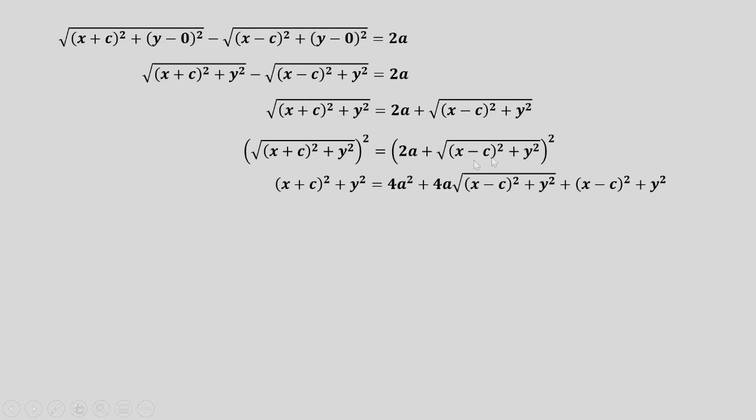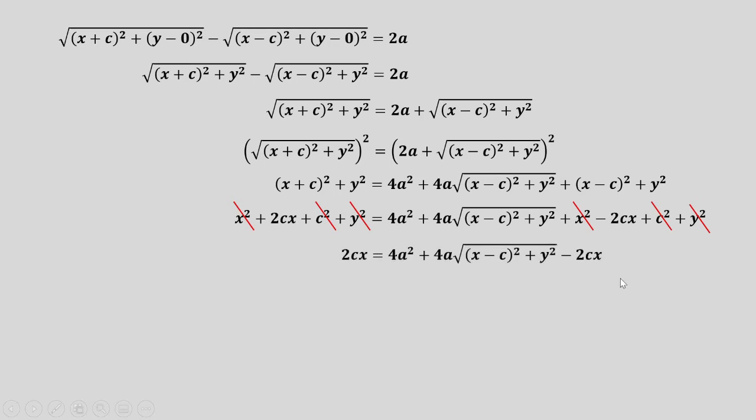For the right side, notice that we performed square of a binomial. And same thing, performing square of a binomial for X plus C here gives us this, and for X minus C here gives us these three terms. We can cancel some of the terms, leaving us this equation.